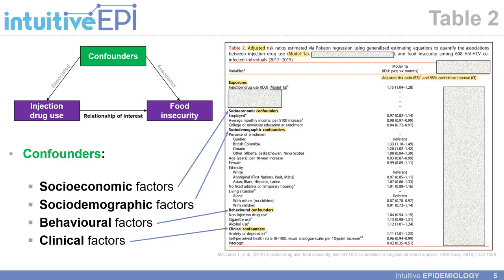This multivariable model, as depicted in Table 2, is examining the relationship between IDU as a behavior and food insecurity as an outcome. In order to quantify this relationship, we adjust for a variety of socioeconomic, sociodemographic, behavioral, and clinical confounding factors.